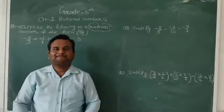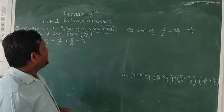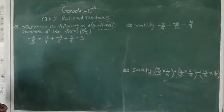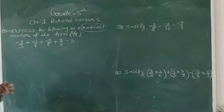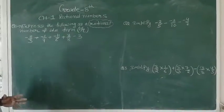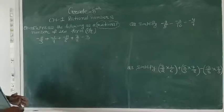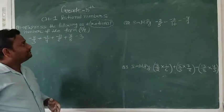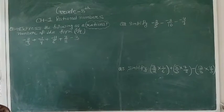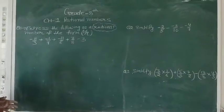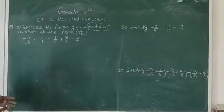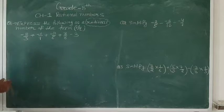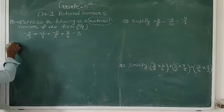Good morning students. Let us start Grade 8 Chapter 1 Rational Numbers. Today we are going to revise how we express numbers as rational numbers — specifically, how we can express the addition and subtraction of various numbers as a rational number. For this, let us solve some questions.